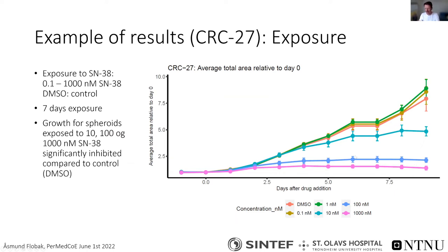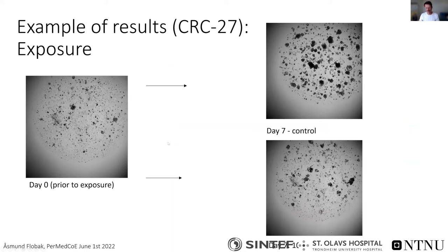Why do we need two trajectories? From the computationally oriented side we need this validation step — we cannot trust that the computer is going to be correct just yet. At the same time, for the functional side where we test drugs on patient cells, the amount of material available is very limited — we can only test a few drugs. Therefore these go together: the computational side will help us prioritize and the functional validation step will help us gain confidence that we have found good candidates.